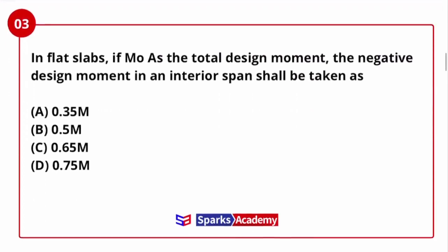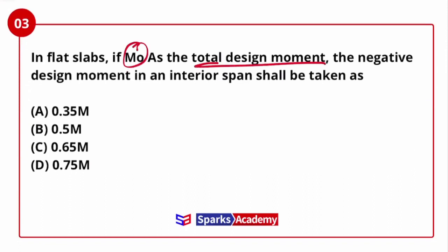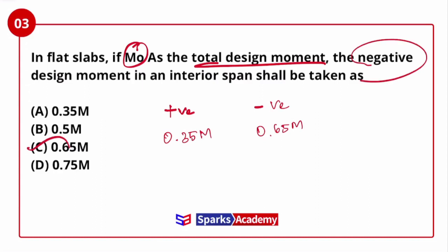Next question: in a flat slab, if M0 is the total design moment, what is the negative design moment as a percentage? The options are 0.35, 0.5, 0.65, and 0.75. The total design moment M0 is distributed as negative design moment and positive design moment. Positive is 0.35 M0 and negative is 0.65 M0. So the answer for this question is 0.65.